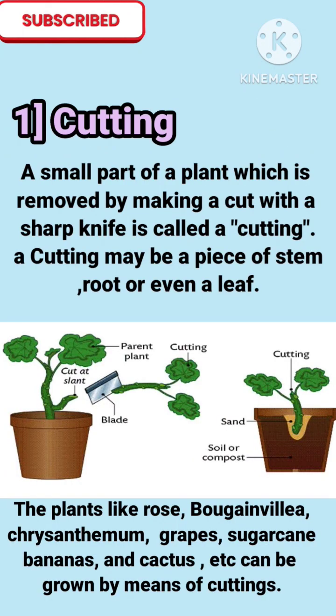A small part of a plant which is removed by making a cut with a sharp knife is called a cutting. A cutting may be a piece of a stem, root, or even a leaf.